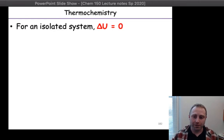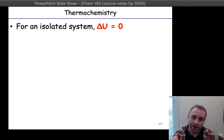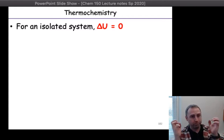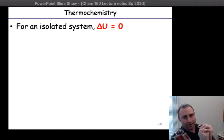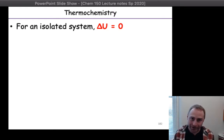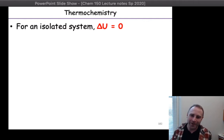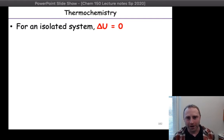Let's go back to those definitions of systems from the previous video. We talked about an isolated system — isolated systems had no exchange of energy and no exchange of matter. Nothing's interacting with it; the system and surroundings are not exchanging anything. Well, if they're not exchanging anything, is the internal energy of the system going to change? No! Because delta U equals Q plus W, and if Q equals zero and W equals zero, then the internal energy change for an isolated system is going to be zero. So, obviously, these are really boring — the answer is always zero.